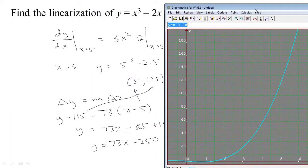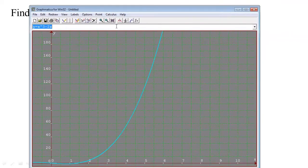And then we just figured out that the linearization was 73X minus 250. So we can graph Y equals 73X minus 250. And see we've found the linearization or the linear function that approximates the function near the point 5. So that can be very useful as well as we're taking a non-linear function and we get an approximation that as long as we're near 5 works pretty well.